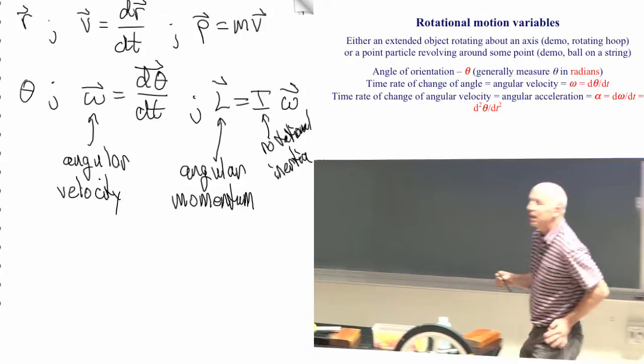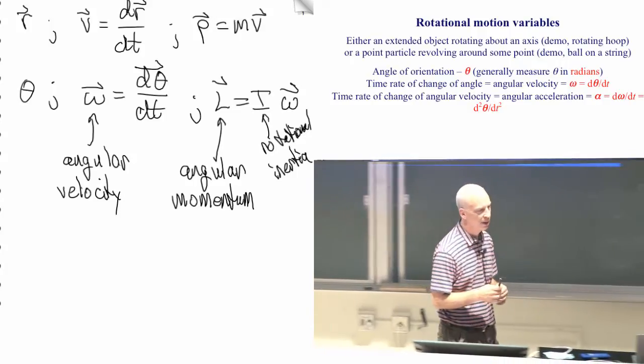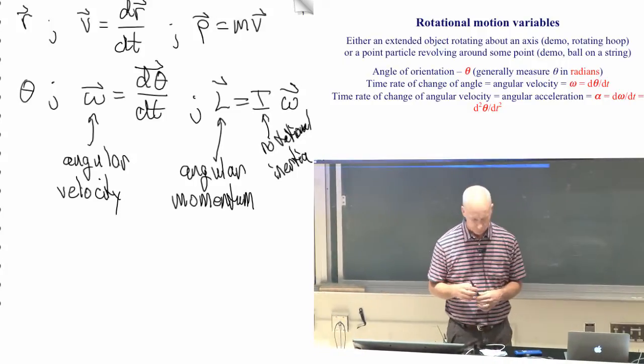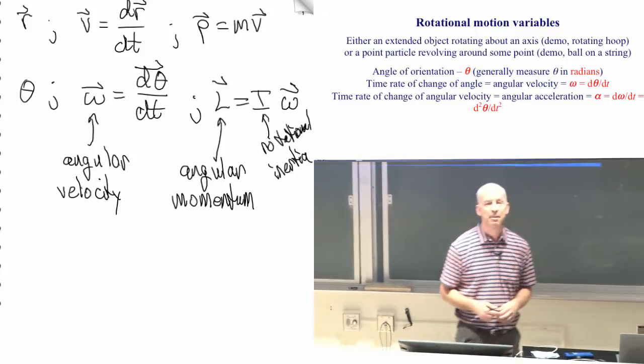But there's a quantity that tells you how hard it is to rotate something. Some things are easy to rotate, some things are harder to rotate, and we'll have to talk about why. It just has to do with where the mass is.